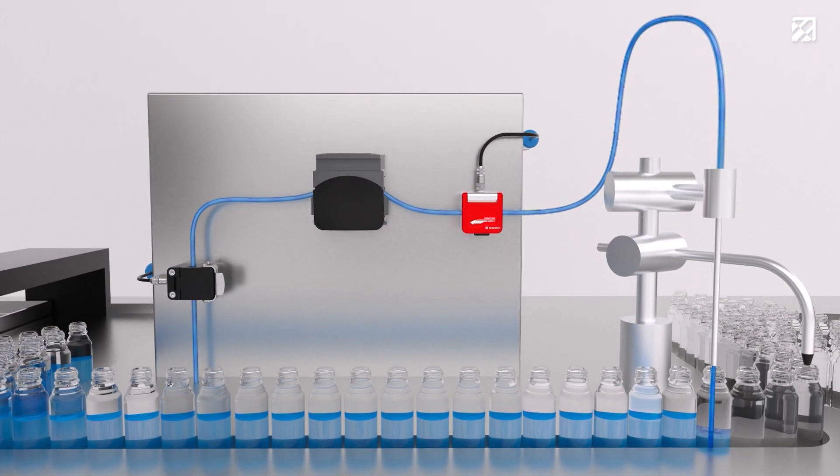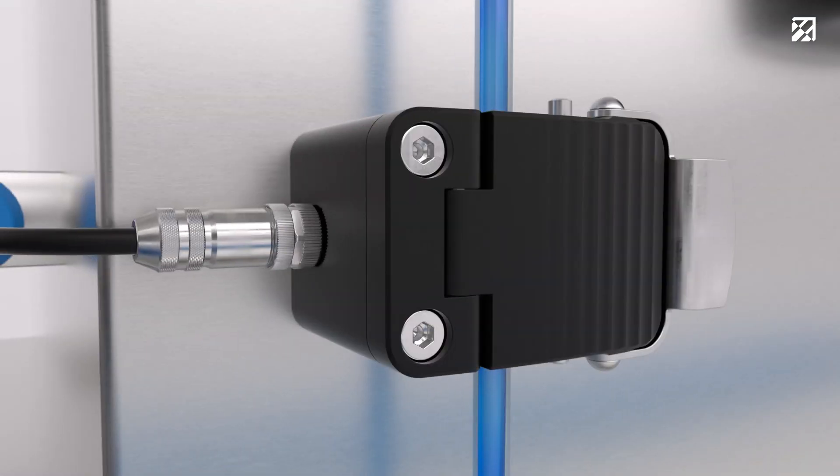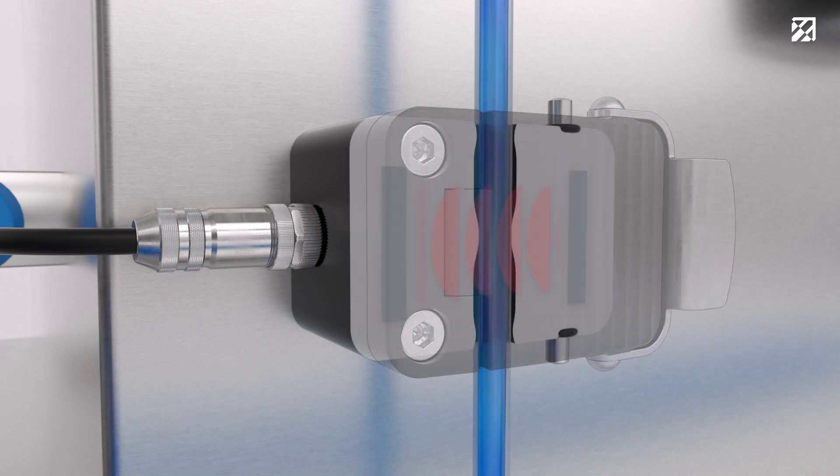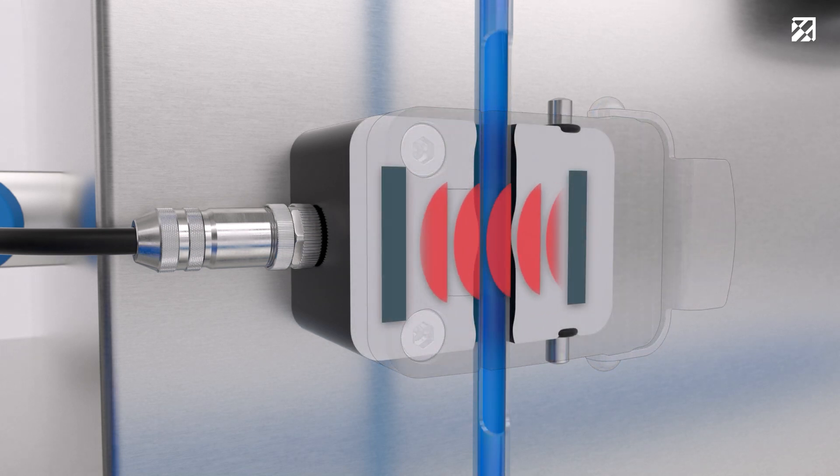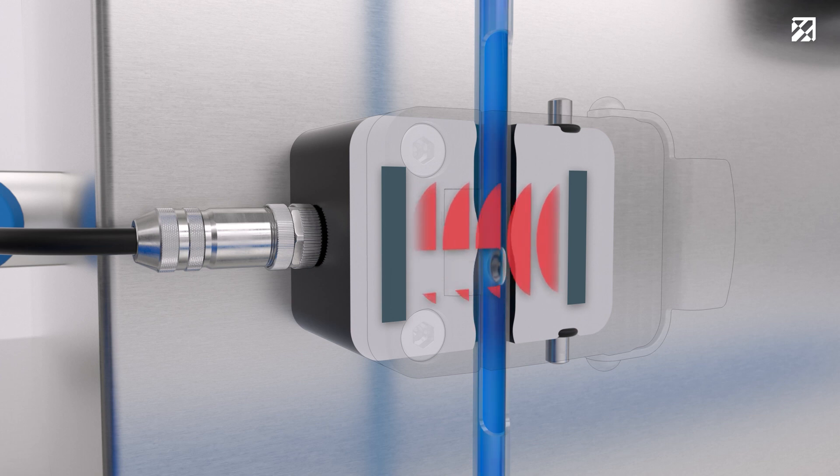With our SonoCheck ABDO-6 air bubble detectors, we offer non-contact clamp-on ultrasonic sensors which detect smallest air bubbles in the tubing, for example, to ensure exact volume dosing in vials.